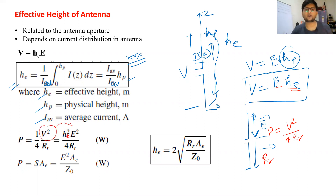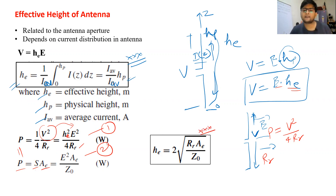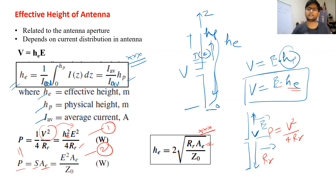Since V = E times he, we replace V squared with he squared times E squared, giving P = he squared times E squared divided by 4Rr. This is equation one for total power radiated from the antenna. The total power radiated can also be defined as the power density (Poynting vector magnitude) multiplied by the effective area Ae — this is equation two. Since both are equal, we can equate them and find the effective height of the antenna in terms of effective area. This is how effective height and effective area of antennas are related.